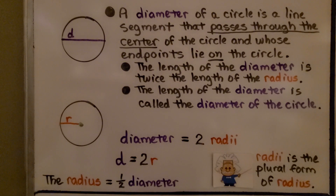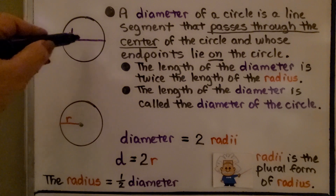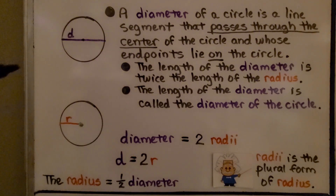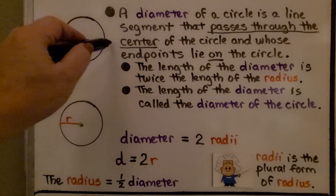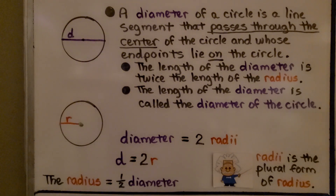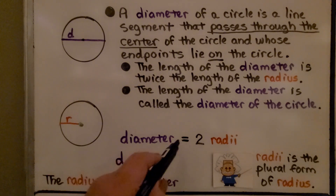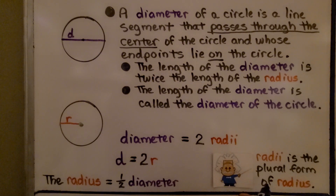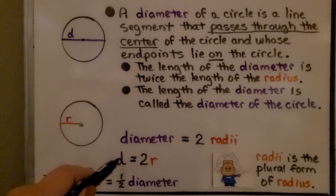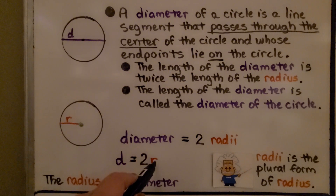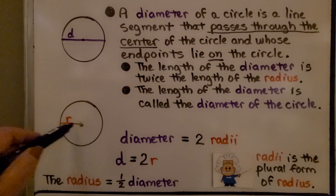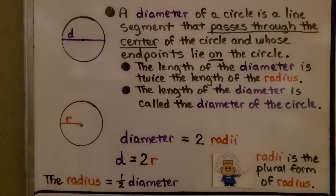A diameter of a circle is a line segment that passes through the center of the circle and whose endpoints are on the circle. The length of the diameter is twice the length of the radius, and the length of the diameter is called the diameter of the circle. So a diameter equals two radii — radii is the plural form of radius. We can say D for diameter is equal to two times R for radius, which means the radius is equal to half the diameter.